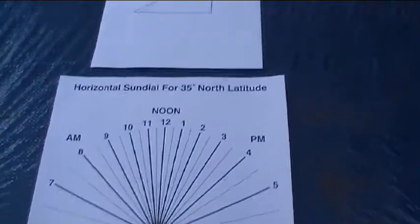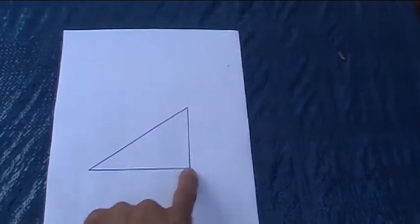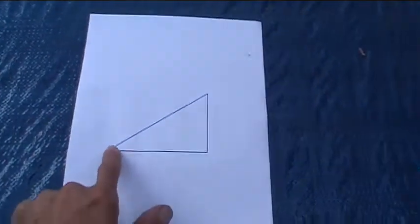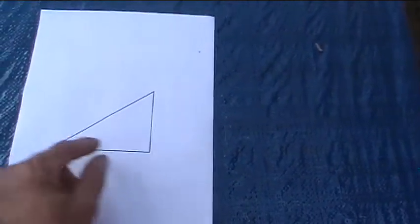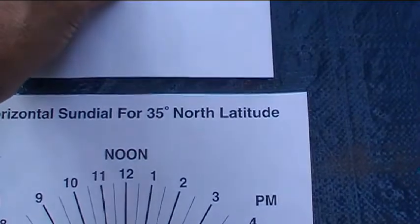The part that makes the shadow on the sundial, a horizontal sundial anyway, is called the gnomon. It's just a triangle, and it has the same angle here relative to here of 35 degrees, which is 35 degrees north latitude.